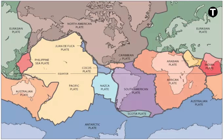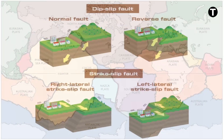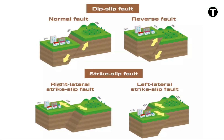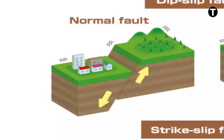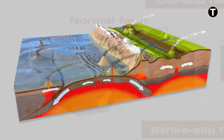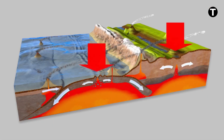Tectonic earthquakes are associated with the movement along fault lines. These faults come in three main types: normal, reverse, and strike-slip. Normal faults are dip-slip and involve vertical movement. In a normal fault, the block above the fault moves down relative to the block below. Normal faults occur mainly in areas where the crust is being extended, such as at divergent boundaries.